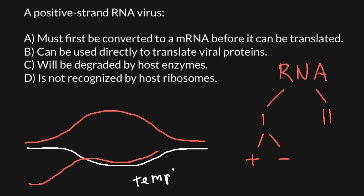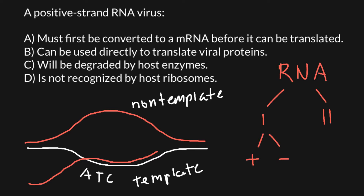which we call the template strand of the DNA. And another strand of the DNA would be non-template. Messenger RNA would be complementary to the template strand. For example, if on the template strand of the DNA we have A, T, C, and G, here on the messenger RNA we would have adenine base-pair with uracil, thymine base-pair with adenine, cytosine with guanine, and guanine with cytosine.